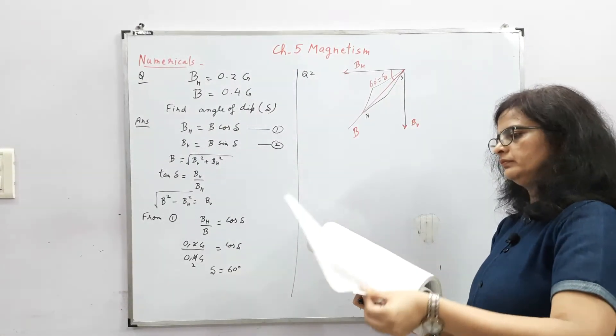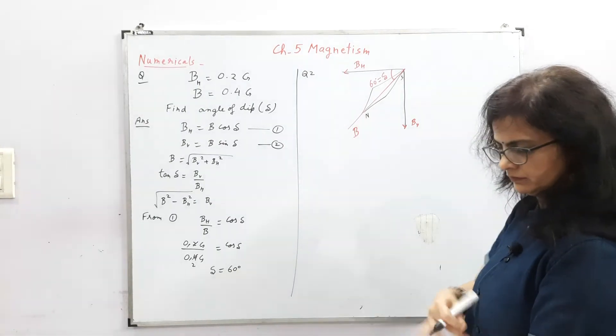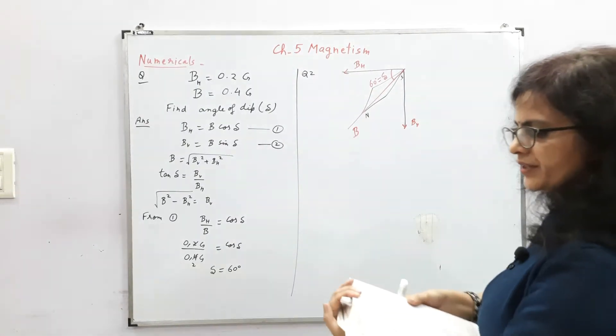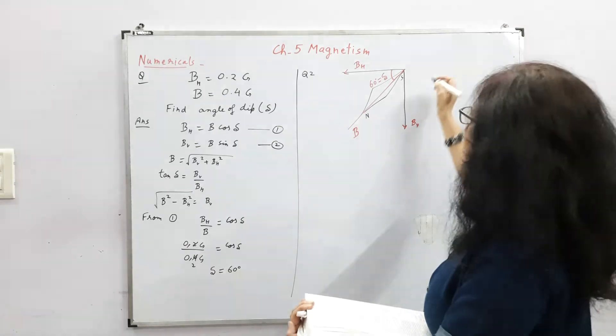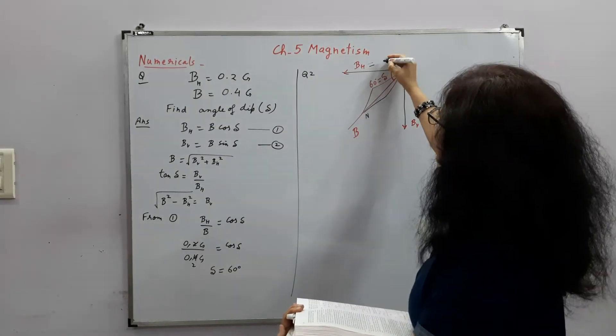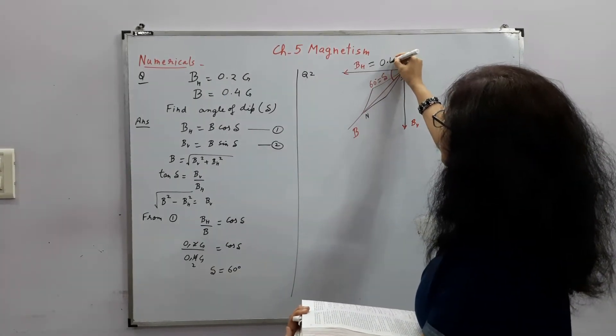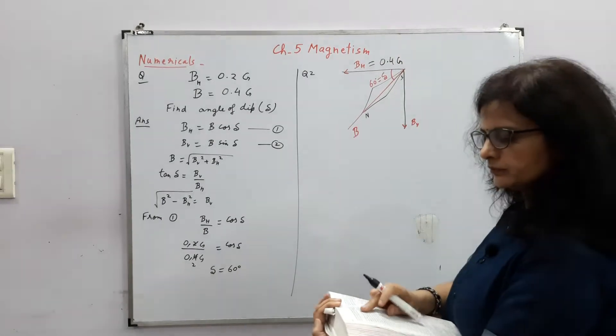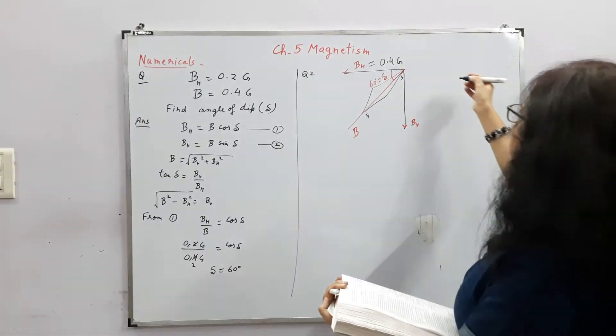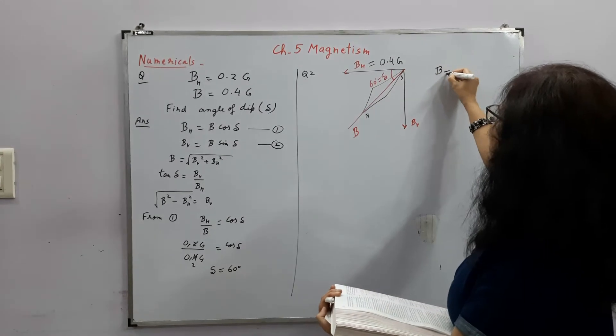So this is what is given. The horizontal component of earth's magnetic field at the place is 0.4 Gauss. Determine the magnitude of the earth's magnetic field.